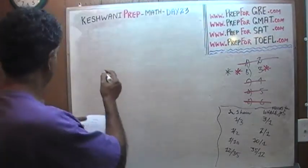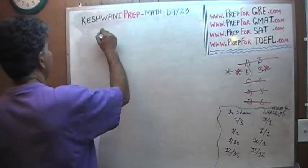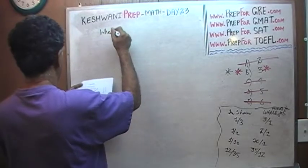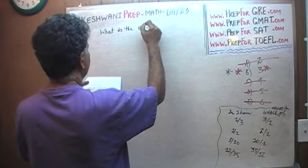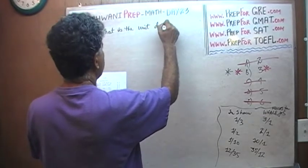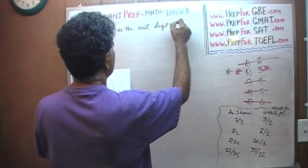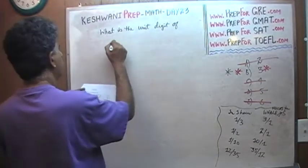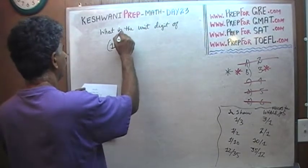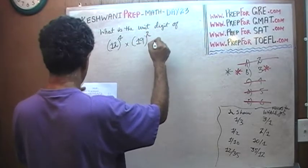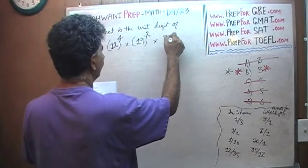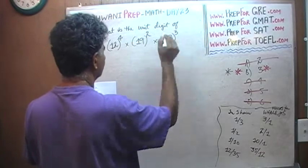Here's the question. The question simply is: What is the unit digit of 12 raised to 4 times 19 raised to 2 times 33 raised to 3?